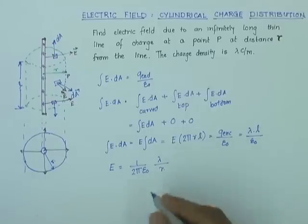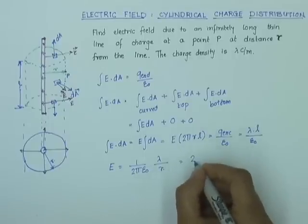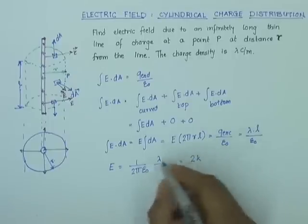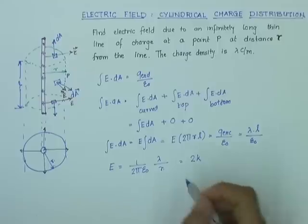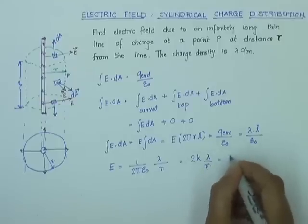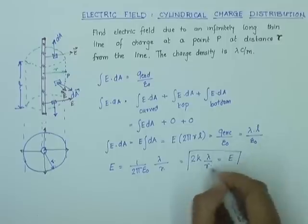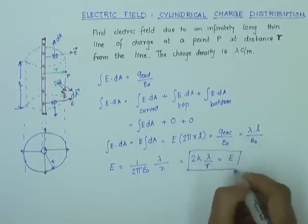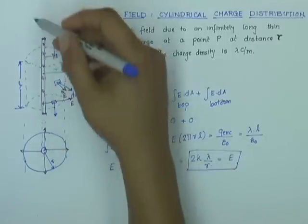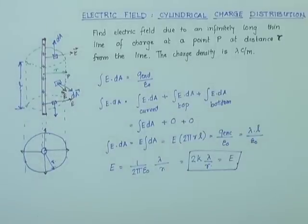So I can write E equals 1 over 2 pi epsilon-zero times lambda over r, or equivalently 2k times lambda over r, since k equals 1 over 4 pi epsilon-zero. This is the electric field at a distance r from an infinitely long insulating wire with charge density lambda coulombs per meter.